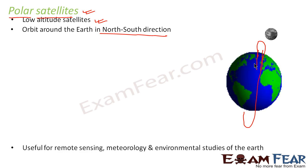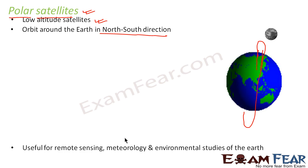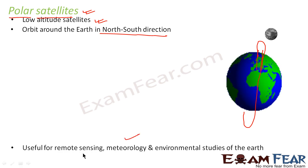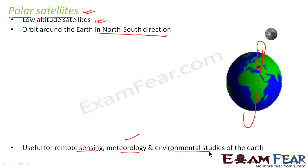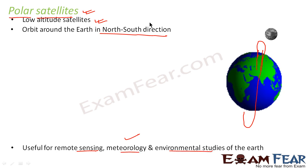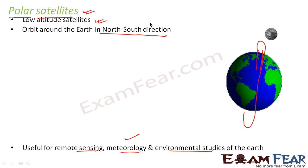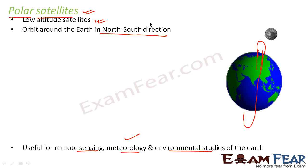So these satellites are useful for remote sensing, meteorology, and environmental studies of earth. These were the two types of satellites — geostationary and polar satellites.